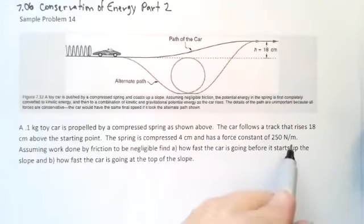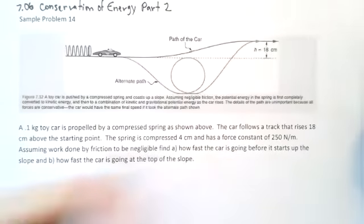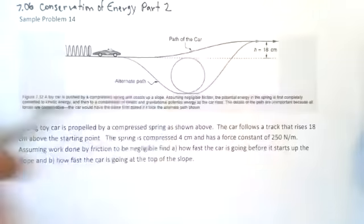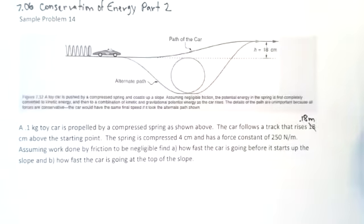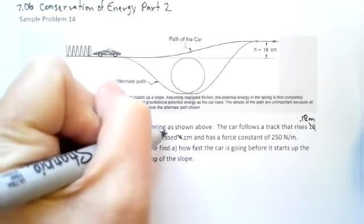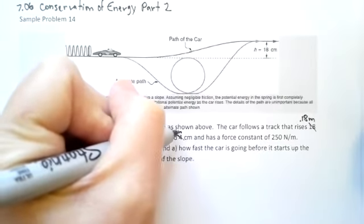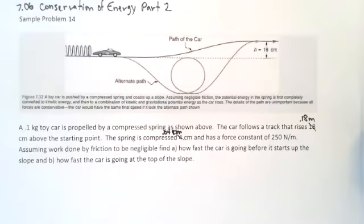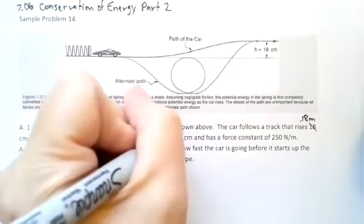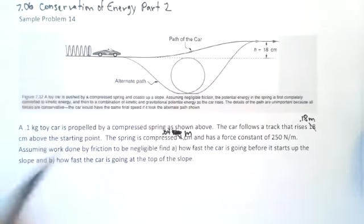So before I go too far, notice here I've got Newton meters, but this is in centimeters and that's in centimeters. I'm going to have unit mismatch. So I'm going to change this to 0.18 meters. And I'm going to change this to 0.04 meters, not centimeters, meters. Let me just cross that off. There we go.